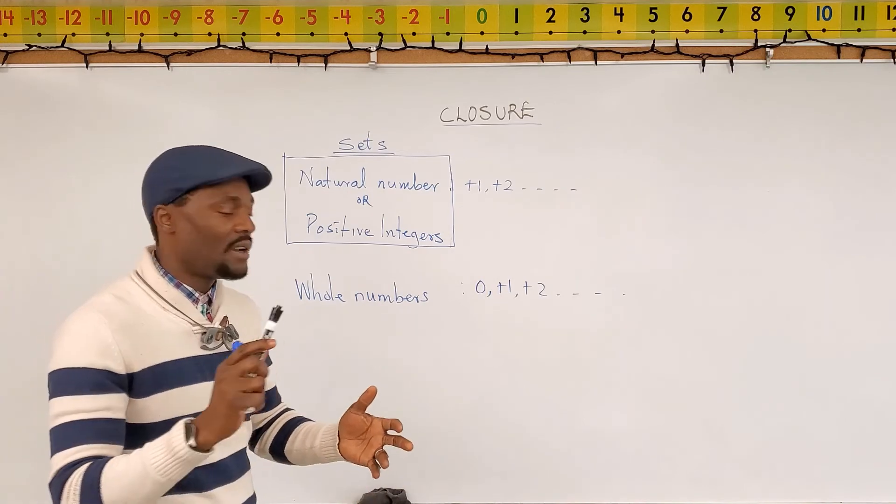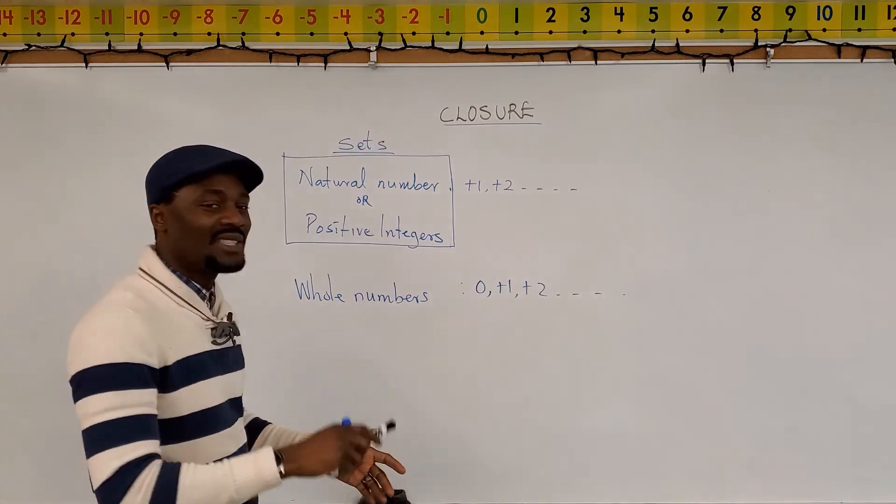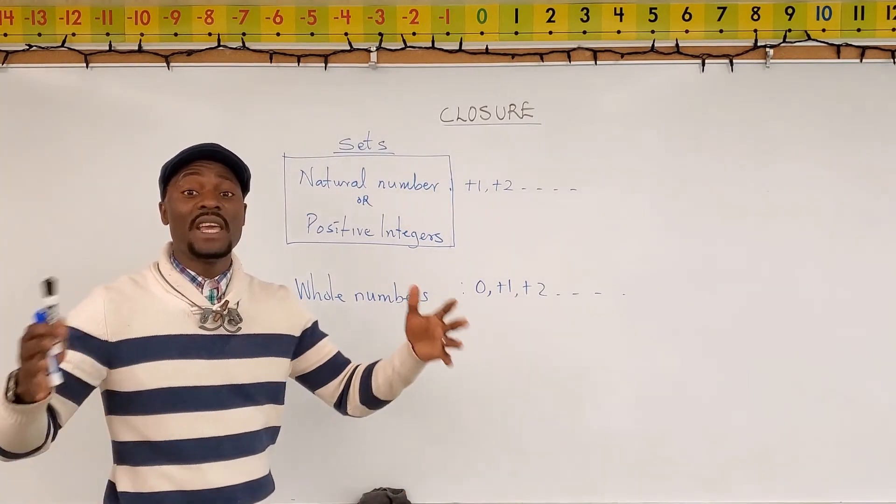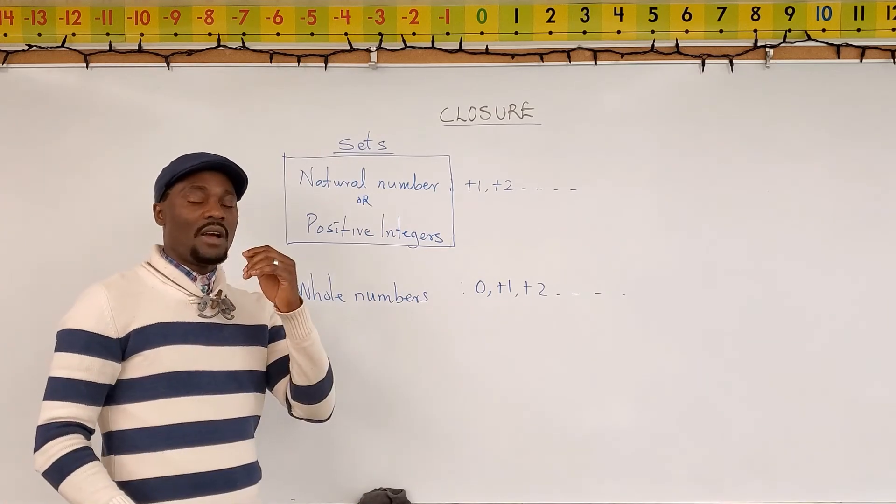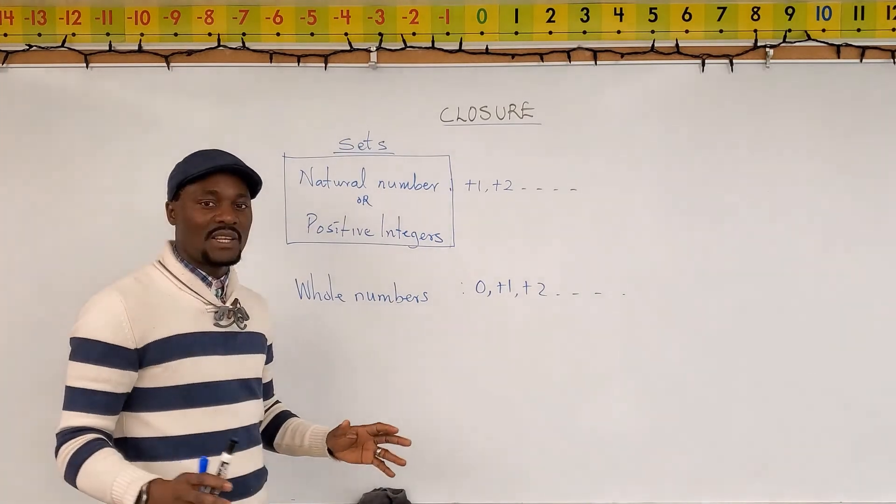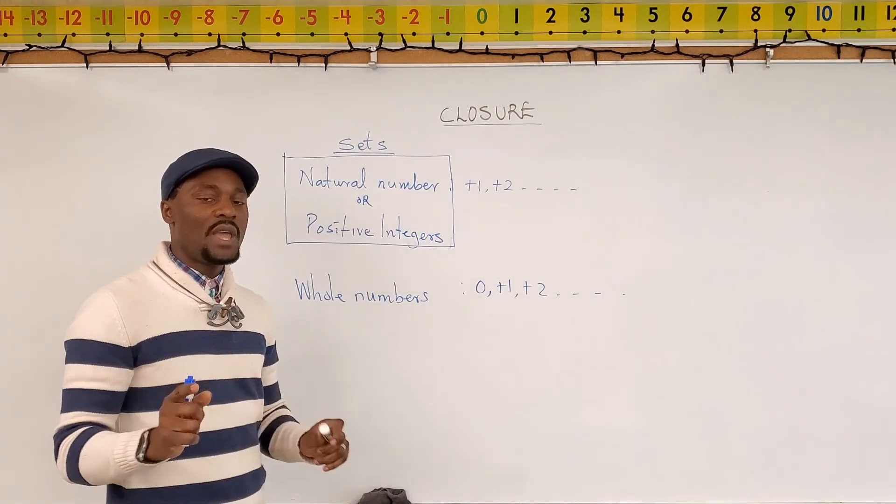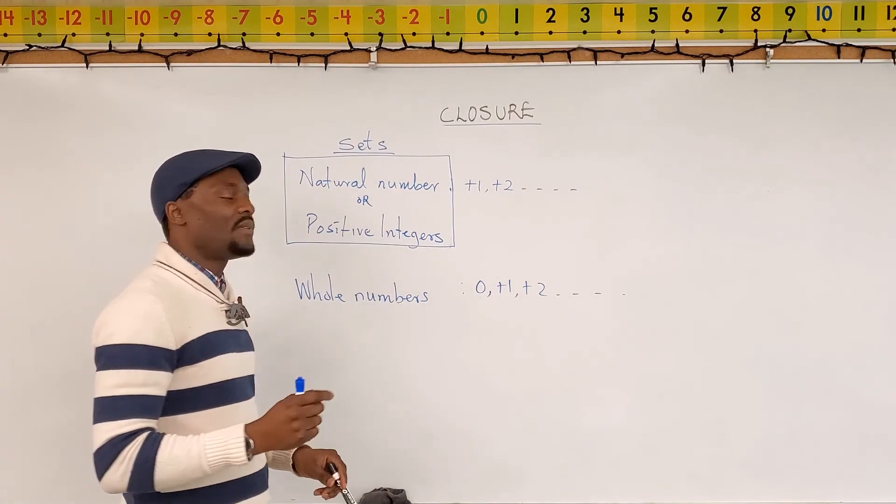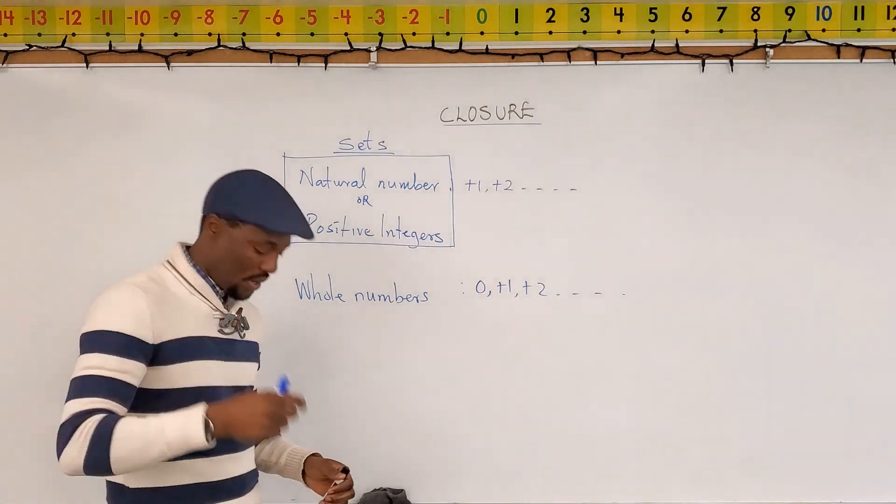So you have the set of real numbers, the set of natural numbers, of whole numbers, negative integers, the set of integers, the set of real numbers. Those are the common sets that show up in your test. And if you're able to define the set, you can define whether the set is closed or not closed.